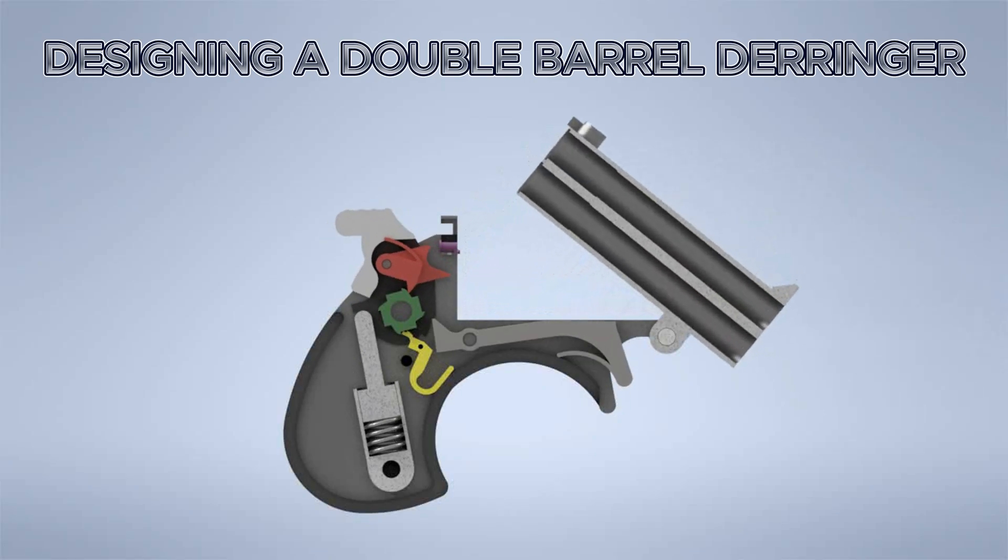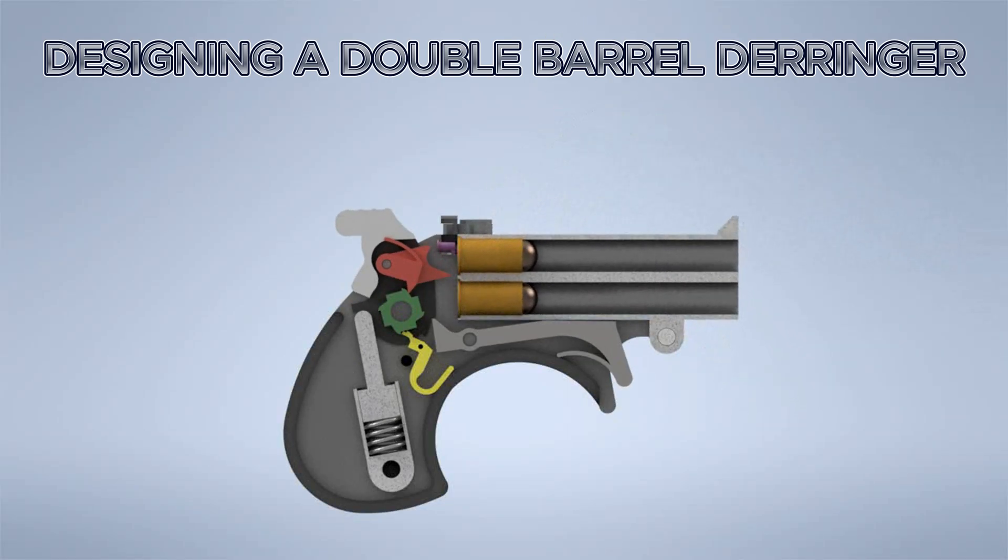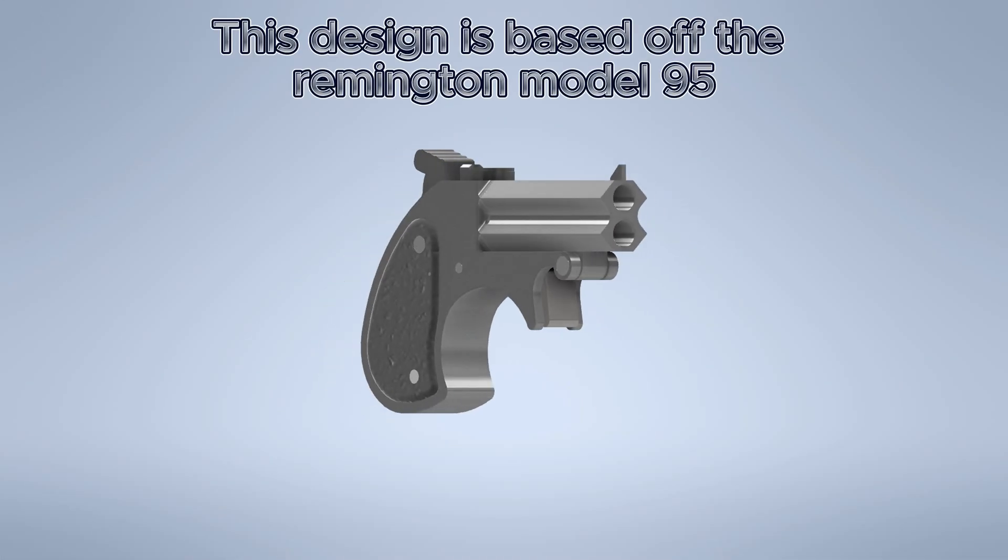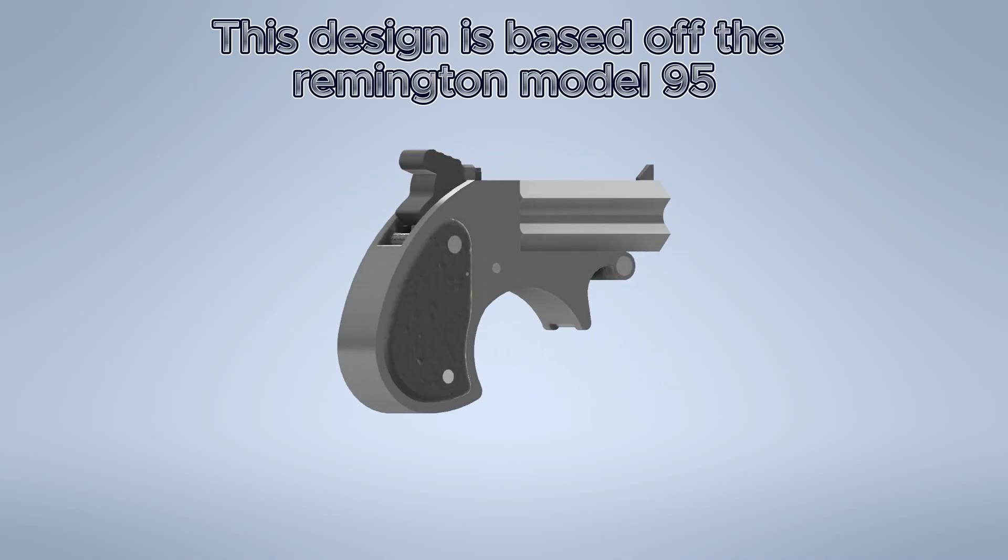Today we're designing a double-barreled Derringer, inspired by the iconic Remington Model 95. First introduced in 1866, the original was chambered in .41 caliber rimfire.